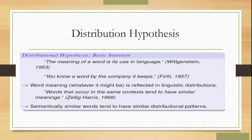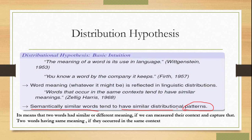So what is the distributional hypothesis? The meaning of a word is in how it is used in a language, and you know a word by the company it keeps. Semantically similar words tend to have similar distributional patterns. So here we are more focusing on the pattern of a particular sentence — how the patterns are similar. If the patterns are similar, we can say that they belong to semantically similar words.